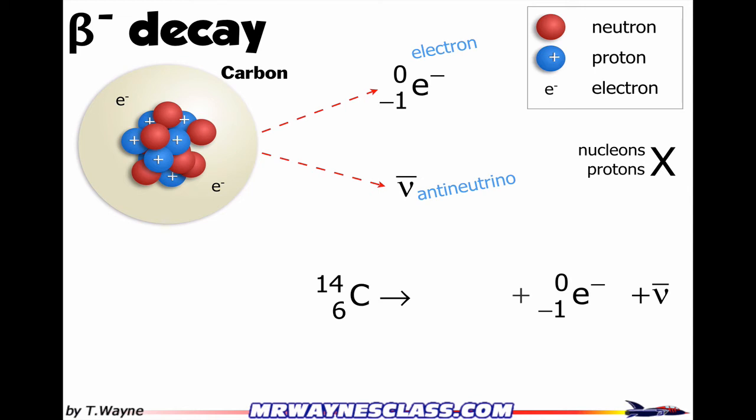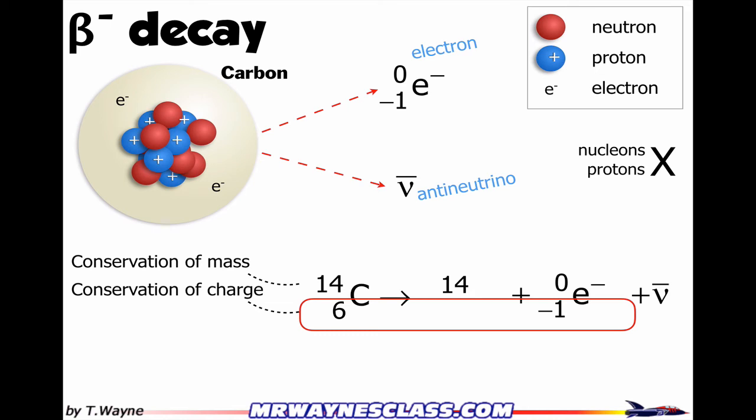Now let's balance this equation. For conservation of mass, I have 14 nucleons. On the right-hand side, I've got zero for the electron. So what plus zero equals 14? Just 14. On the bottom, that's conservation of charge. I've got six positive charges on the left and minus one on the right. So what minus one equals six? That's seven. Anything with seven protons is nitrogen from the periodic table.